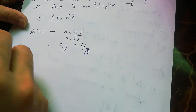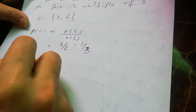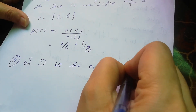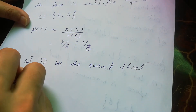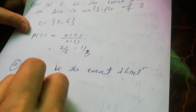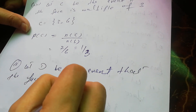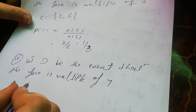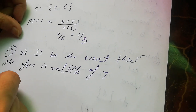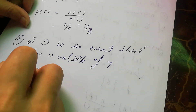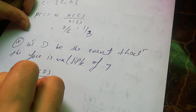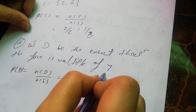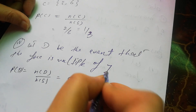Finally, let D be the event that the face is a multiple of 7. There are no multiples of 7 on a standard die, so D is an empty set. Therefore the probability of D is n(D) divided by n(S), which is equal to 0.